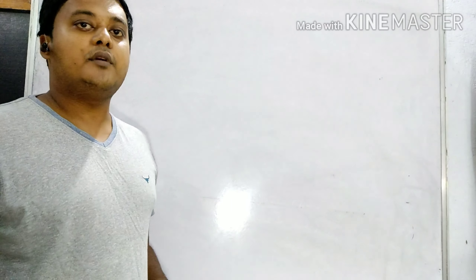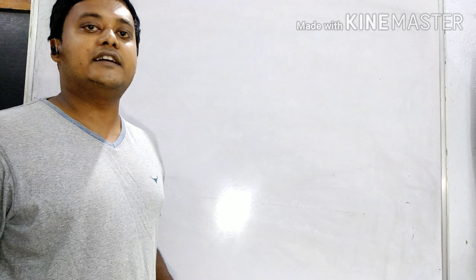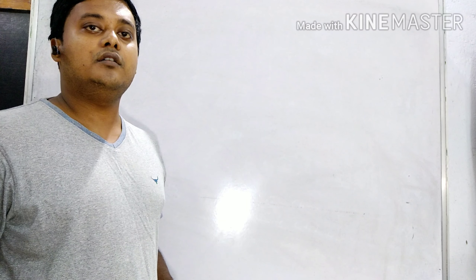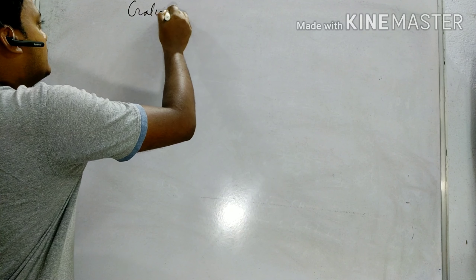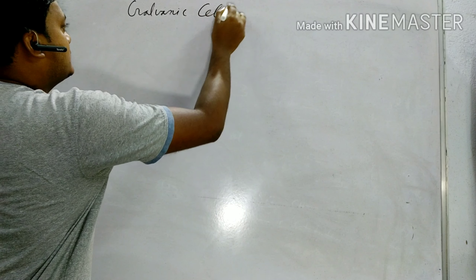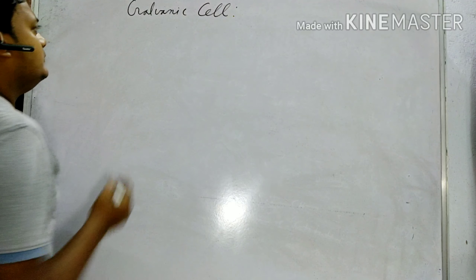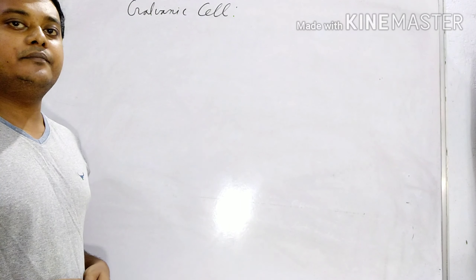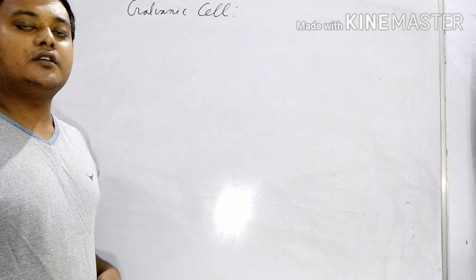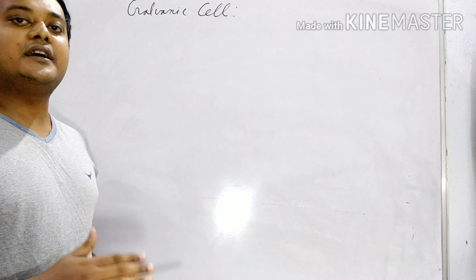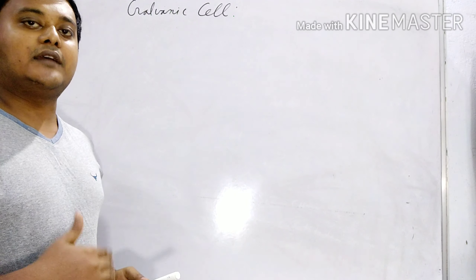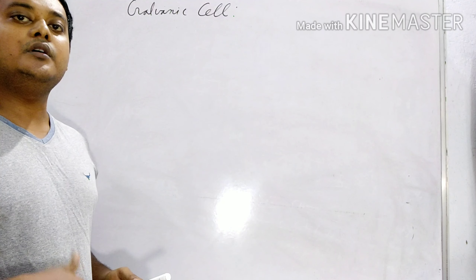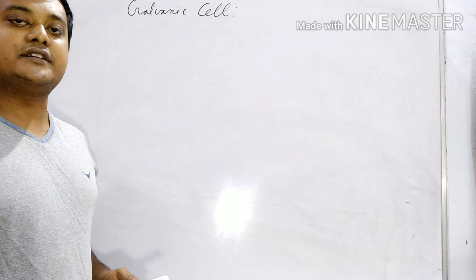This is a Galvanic Cell. Other names of a Galvanic Cell are Electrochemical Cell or Voltaic Cell. A Galvanic Cell is a device which converts chemical energy into electrical energy.